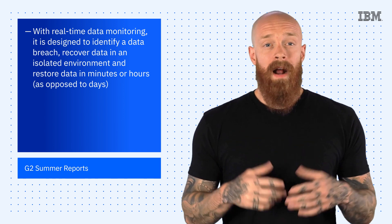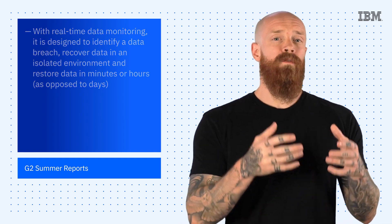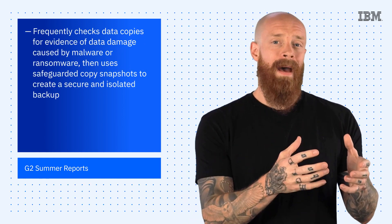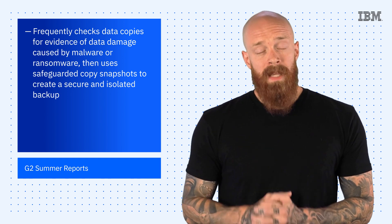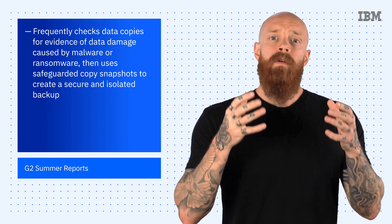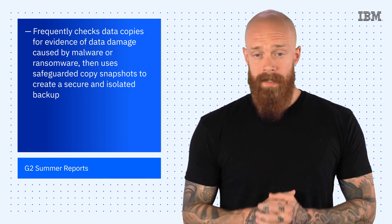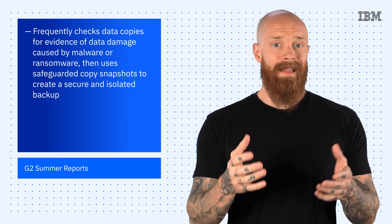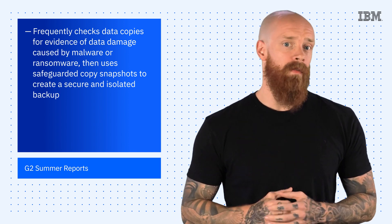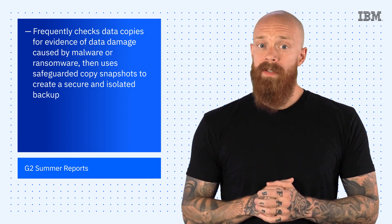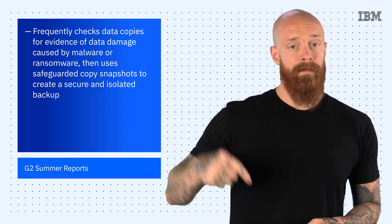Using IBM Safeguarded Copy for IBM Flash System Arrays, Sentinel frequently checks data copies for evidence of data damage caused by malware or ransomware. It then uses Safeguarded Copy Snapshots to create a secure and isolated backup. Ransomware cannot remove, alter, or encrypt Safeguarded Snapshots, even with admin capabilities. So in the event of a cyber attack, these authenticated restore points aid in a speedy recovery. To learn more about IBM Spectrum Sentinel and how it can help you with cyber resilience, check out the blog linked below.